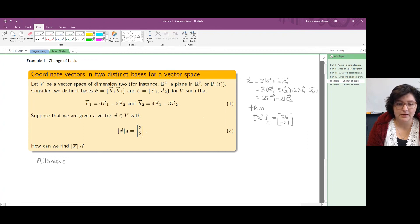That's the process of changing bases. And we could have obtained the coordinates of X with respect to the new basis C by multiplying a matrix by the coordinates with respect to the basis B.